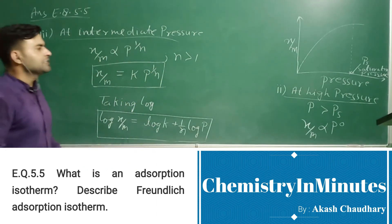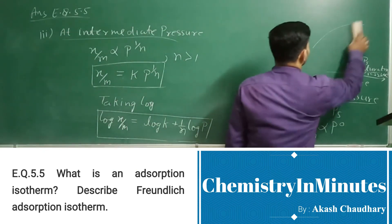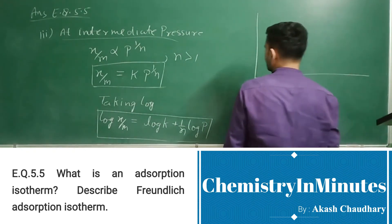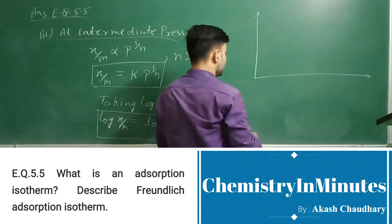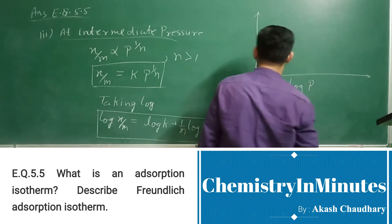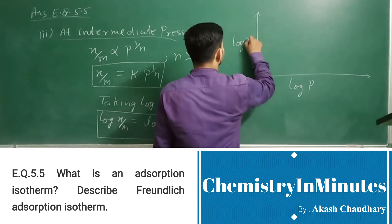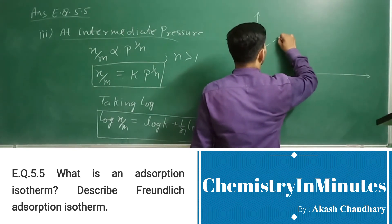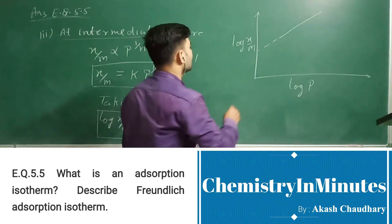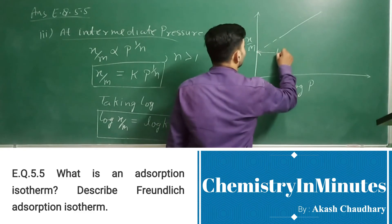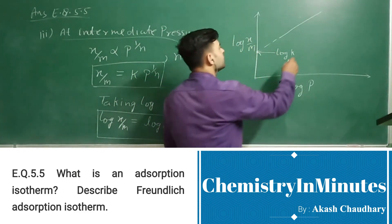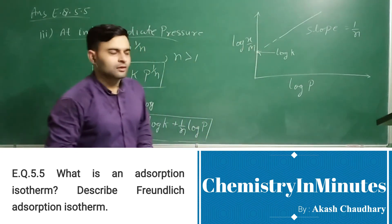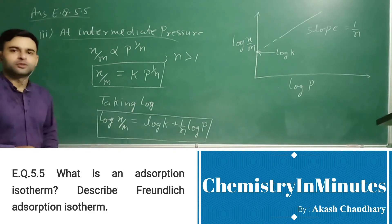Now if we plot these variables on a graph, the graph will come as a straight line. On the horizontal axis we take log p and on the vertical axis we take log x by m. The y-intercept of this line is log k and the slope of this line is 1 upon n. So this is the description of the Freundlich adsorption isotherm.